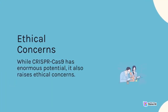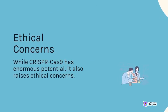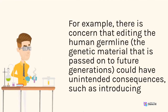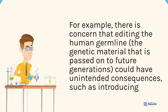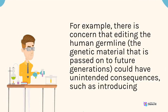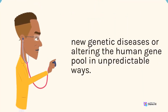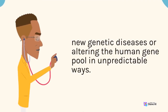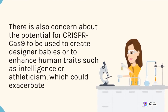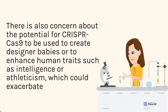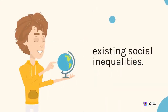While CRISPR-Cas9 has enormous potential, it also raises ethical concerns. For example, there is concern that editing the human germline — the genetic material that is passed on to future generations — could have unintended consequences, such as introducing new genetic diseases or altering the human gene pool in unpredictable ways. There is also concern about the potential for CRISPR-Cas9 to be used to create designer babies or to enhance human traits such as intelligence or athleticism, which could exacerbate existing social inequalities.